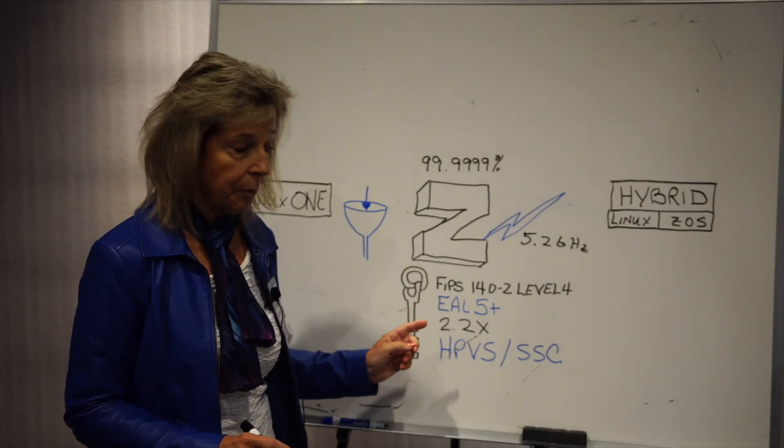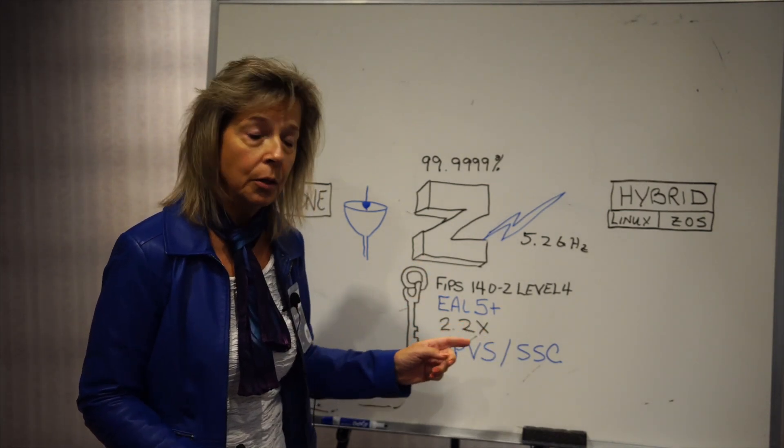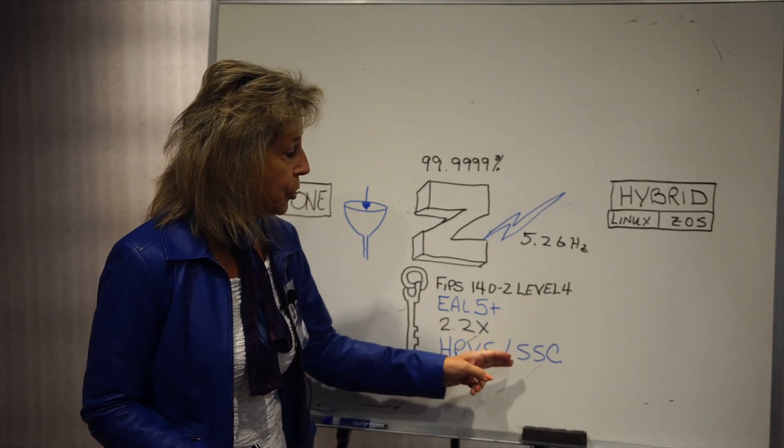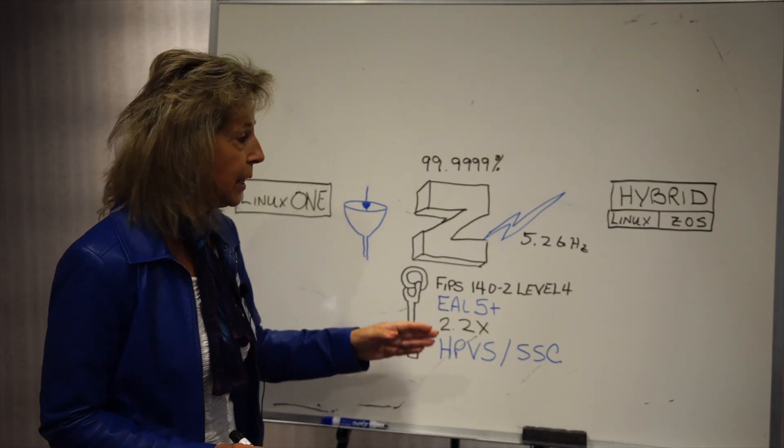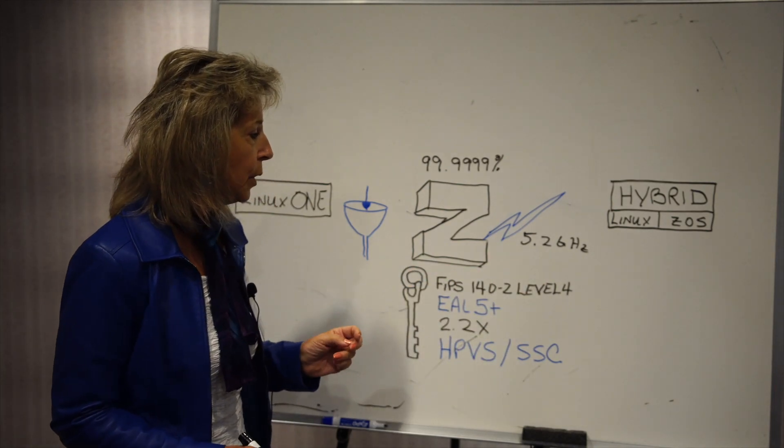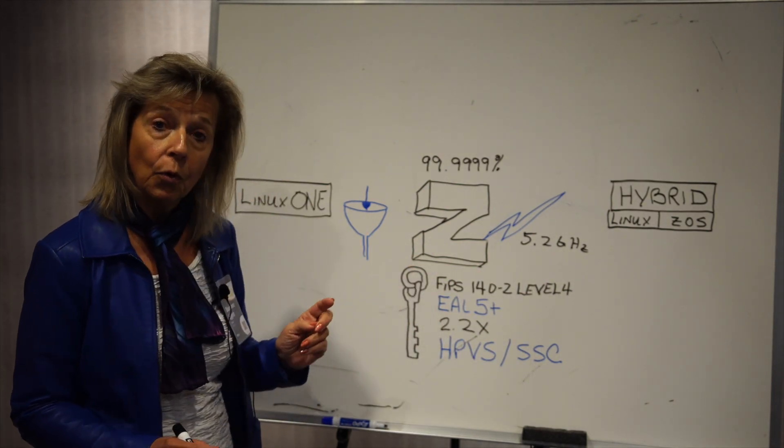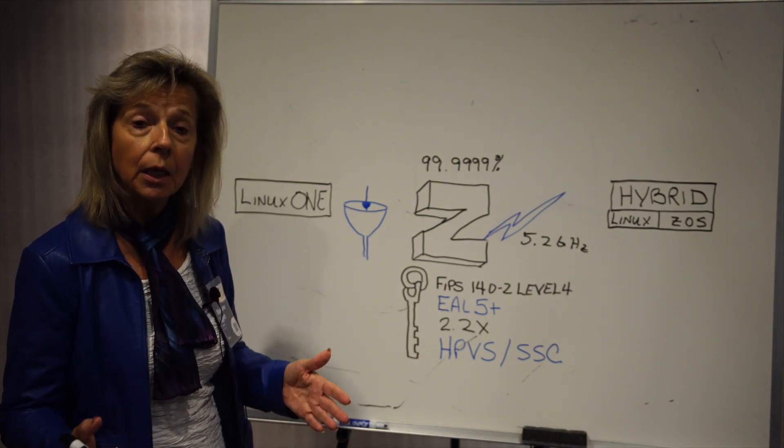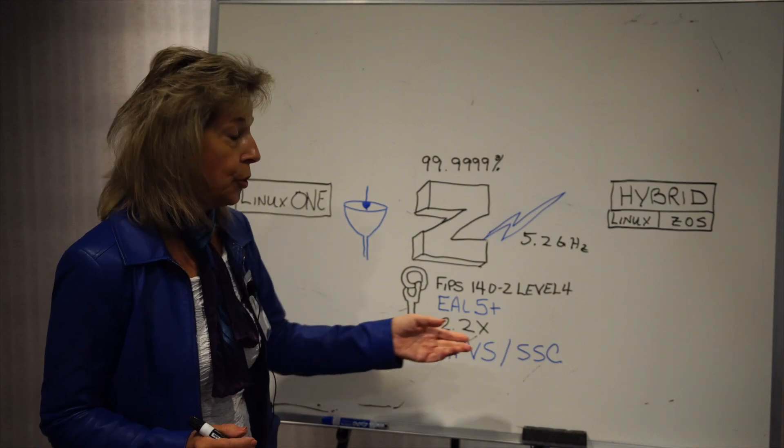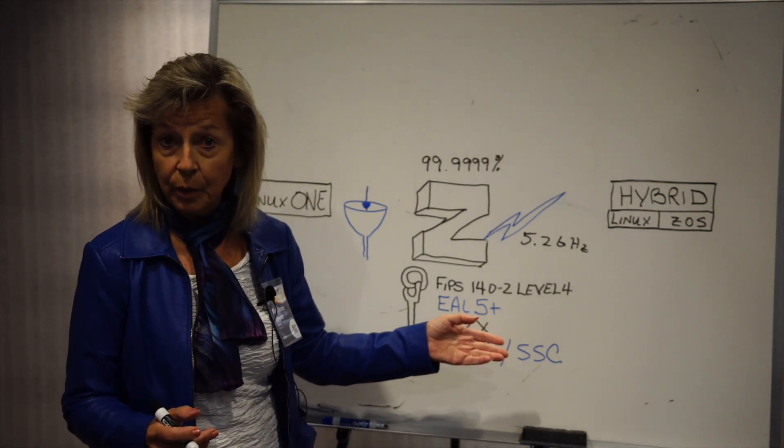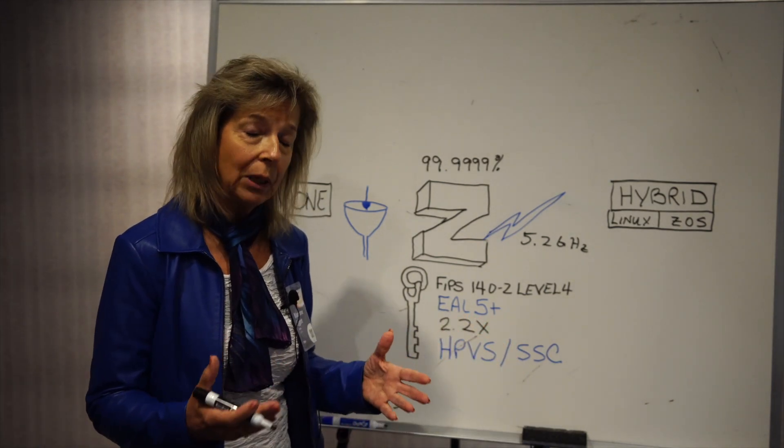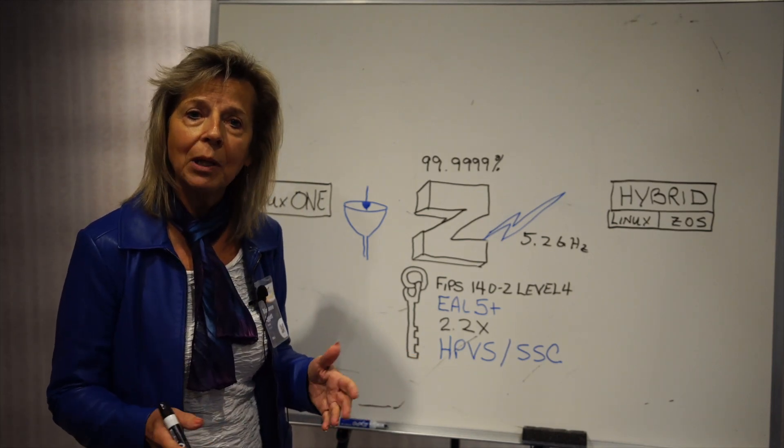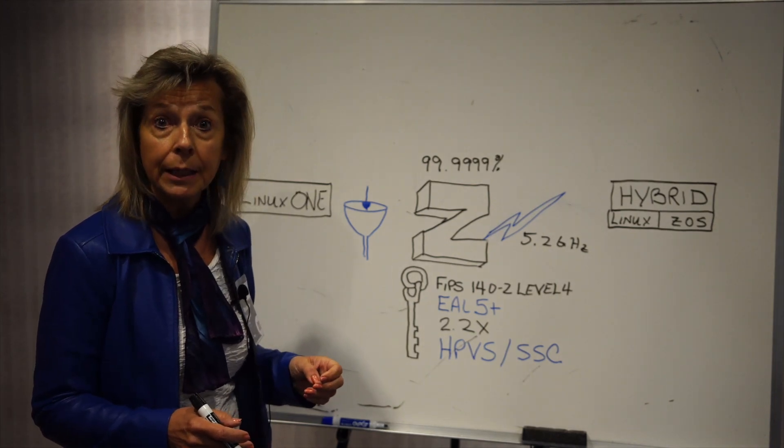Last thing when we're talking about security is something called secure service container. Secure service container is the implementation of this 140-2 level 4 encryption. So a tamper proof key environment. So IBM has offered appliances such as a blockchain which requires that level of security and other appliances such as the IBM IDAA. And that has been available for a while on the IBM Z server.